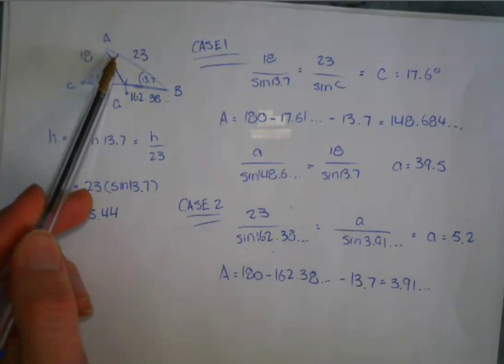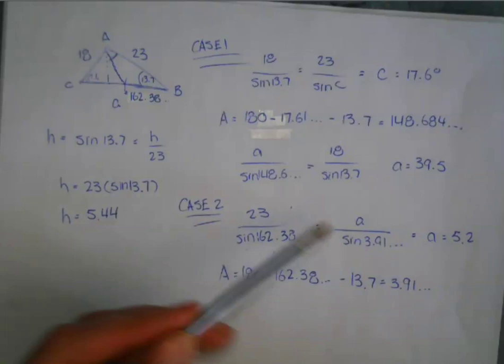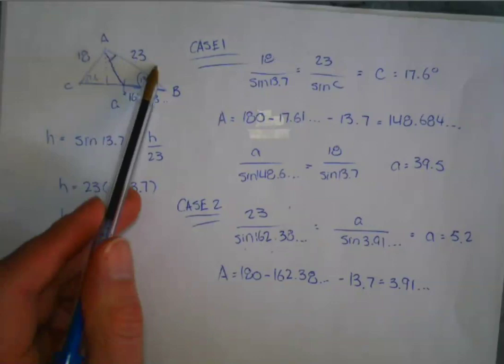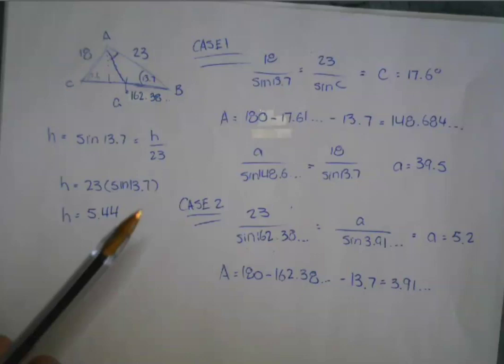Now that I have that 3.91, I can just solve for side A, because it's going to be side A over sine of that angle A is equal to, and then the given that we had there was the side 23. So 23 divided by sine of this other angle, the 162. So 23 times by sine of 3.91 divided by sine of 162.38 leaves us with side A being equal to 5.2.